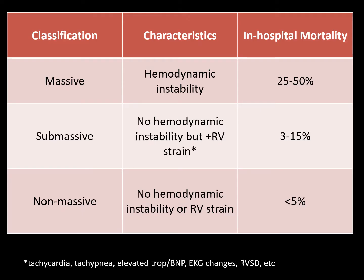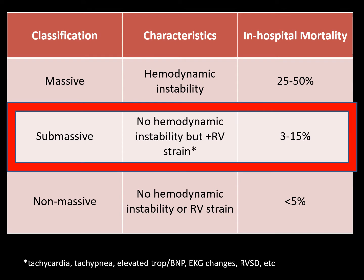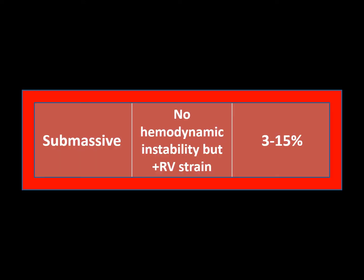The mortality in PE is devastating. Up to half of all massive PE patients die, and these are just the ones that make it to our EDs. While most small PE patients fare well, we need to pay closer attention to this group — the submassives. Submassive PEs have a mortality upwards of 15%, and they are hiding behind their lack of hemodynamic instability.